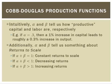Intuitively, what alpha and beta are all about is telling us how productive capital and labor are, respectively. Higher values of alpha tell us that capital is relatively more productive. Higher levels of beta tells us that labor is relatively more productive. We can also say something about returns to scale from alpha and beta.